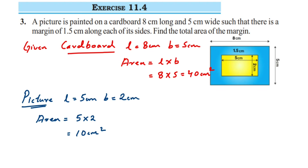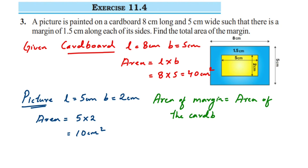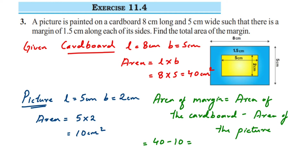Now we have to find the area of the margin. Area of margin equals area of the cardboard minus area of the picture. Area of the cardboard is 40 and area of the picture is 10, so 40 minus 10 is 30. We get 30 centimeter square — this is the total area of the margin.